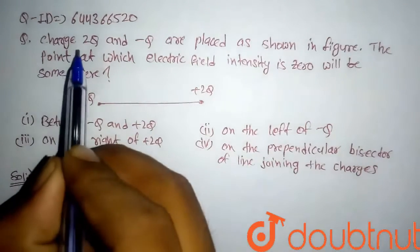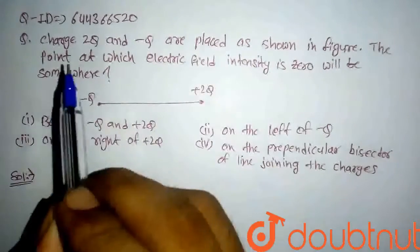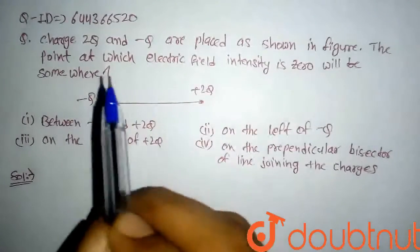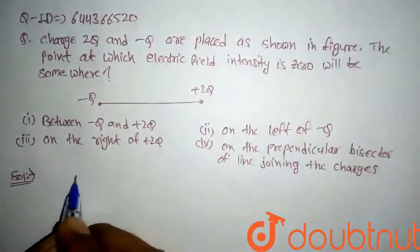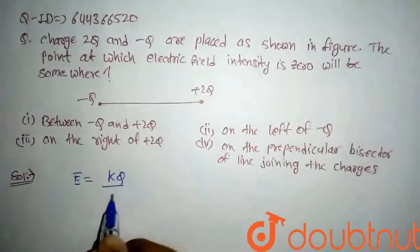Charges +2Q and -2Q are placed as shown in the figure. The point at which electric field intensity is zero will be somewhere. So we know that the electric field intensity is given by E = kQ/r² (vector form of electric field intensity).